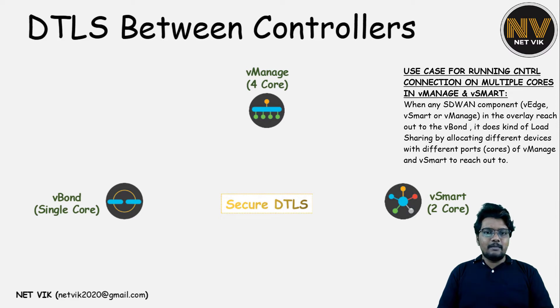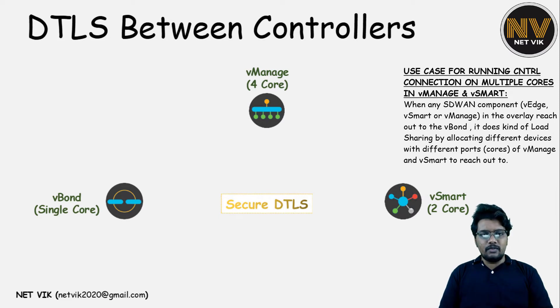Now let's take this example: vManage with four cores and vBond with a single core. vBond will always run on a single core and the only ports it will run on are 1, 2, 3, 4, 6. And vSmart with two cores, just for the example.